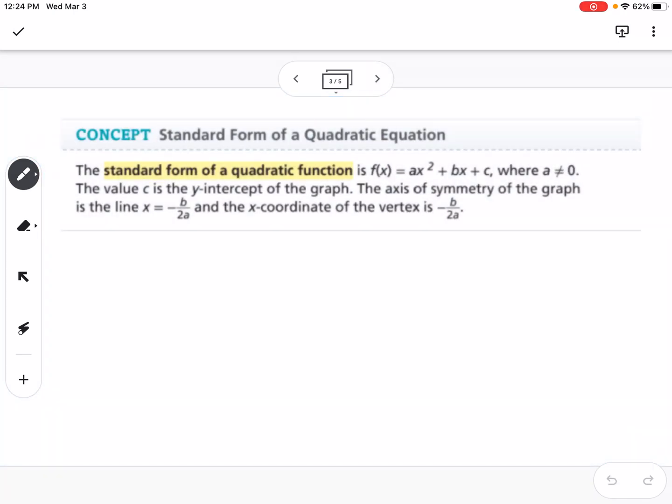The standard form of a quadratic function is f(x) = ax² + bx + c. Where vertex form allowed us to find the vertex, standard form allows us to see what the y-intercept is, our c value.